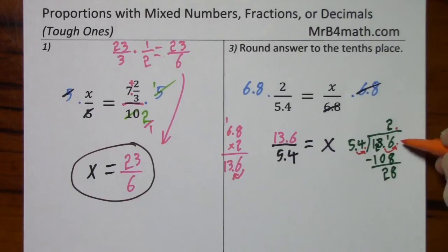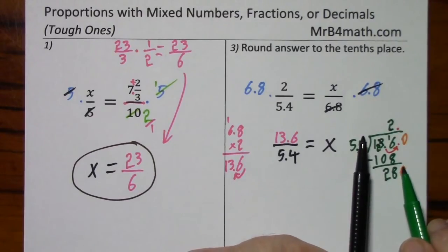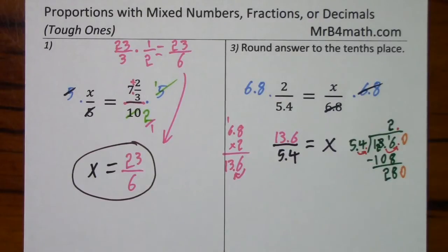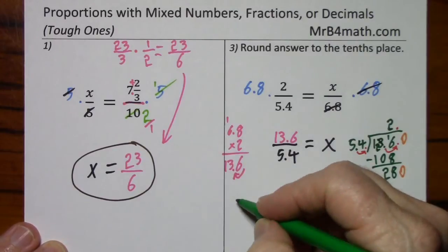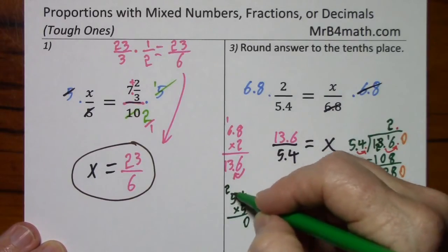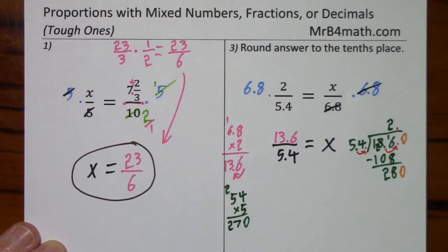I need to bring down a digit, so put in a 0 and bring it down. And again, 5 goes into 28 five times. So I'll try 5 times 54. 27. So that would be 270. So 5 times 54, 270. One more 0 to bring it down.